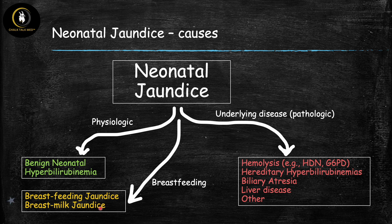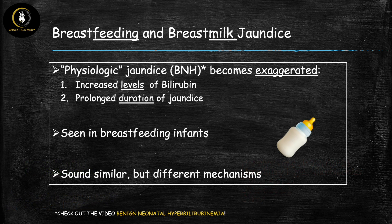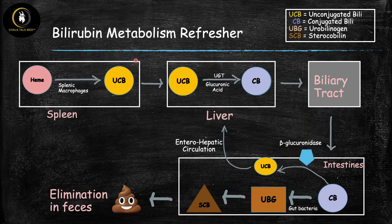The easiest way to think about breastfeeding and breast milk jaundice is that they're just an exaggerated version of physiologic jaundice. All newborns have some transient elevation in their bilirubin that is usually mild and goes away within a couple of weeks. But in these two conditions, this can become exaggerated and lead to higher bilirubin levels or a prolonged duration of jaundice. This is usually seen in breastfeeding infants. Even though the two conditions sound very similar, they have very different mechanisms.